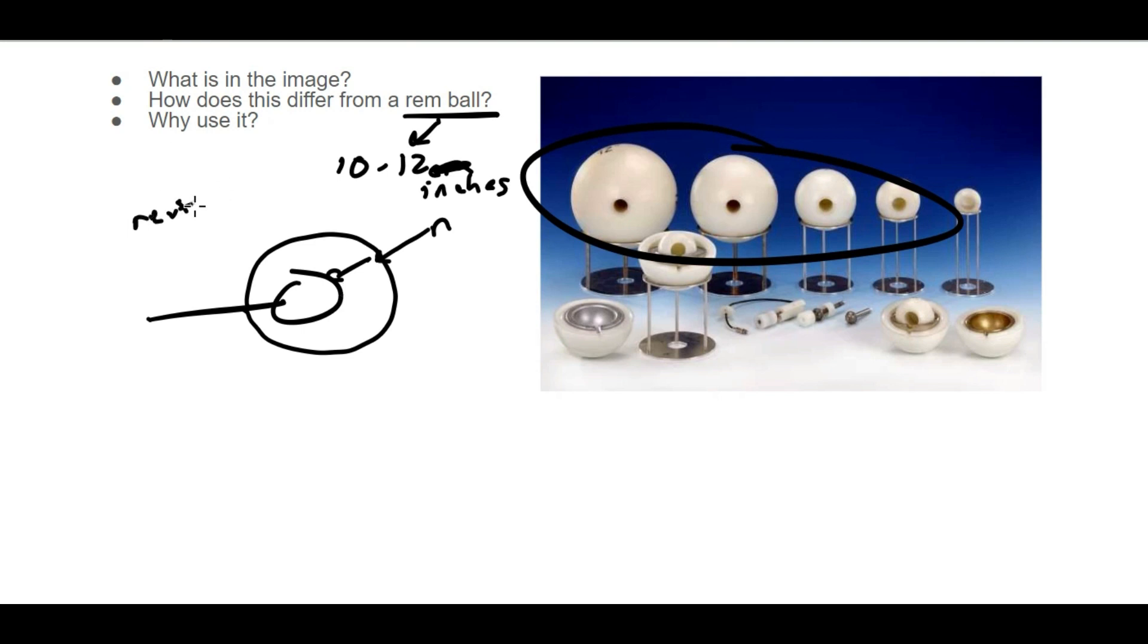Bonner spheres have really good gamma ray discrimination. Their range is from background all the way to grays, so great for shielding. If you have high levels of neutron dose, it will be able to detect it. It also measures dose equivalent, which is really nice.